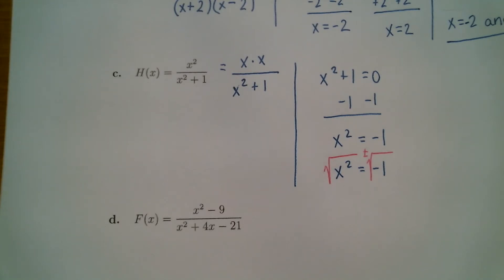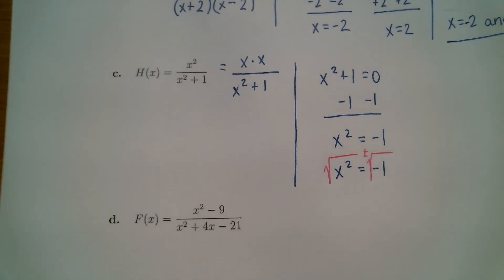So you've run into a problem. This has happened to us before, like when we were looking for x-intercepts for a quadratic and we had to use the quadratic formula and ended up with a negative underneath. Just like when you were finding x-intercepts and got a negative under the square root, now you're looking for vertical asymptotes and you end up with a negative under the square root. That means there are no vertical asymptotes.